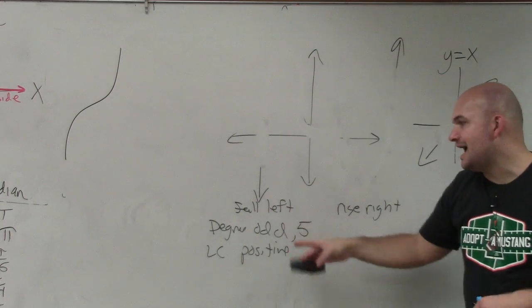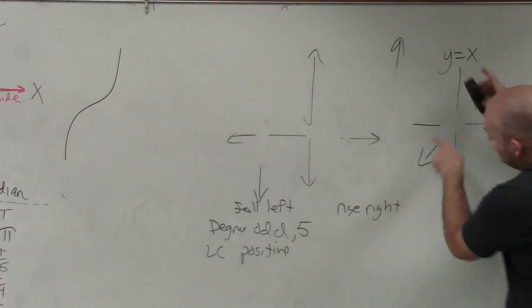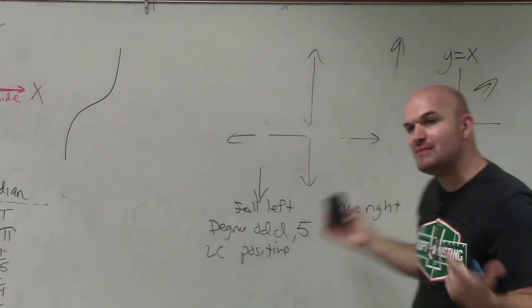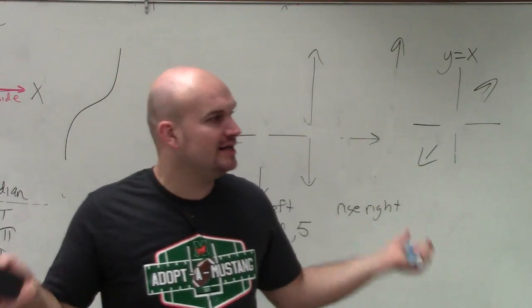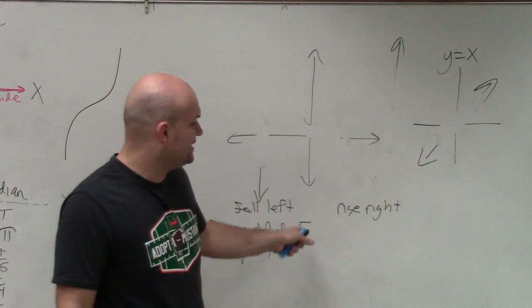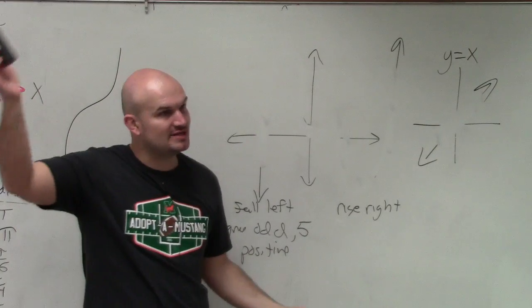As long as the degree is odd and the leading coefficient is positive, it falls left and rises right. It doesn't matter what the polynomial is. For all polynomials that have an odd degree and a positive leading coefficient, the end behavior is the same: falls left, rises right.